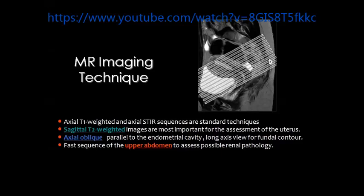One of the important pulse sequences which should never be omitted in the examination of the female pelvis is the sagittal T2-weighted image. This is very important to assess the uterine anatomy and most of the uterine pathology, especially when you are inquired about the zonal anatomy and the endometrial pathology.